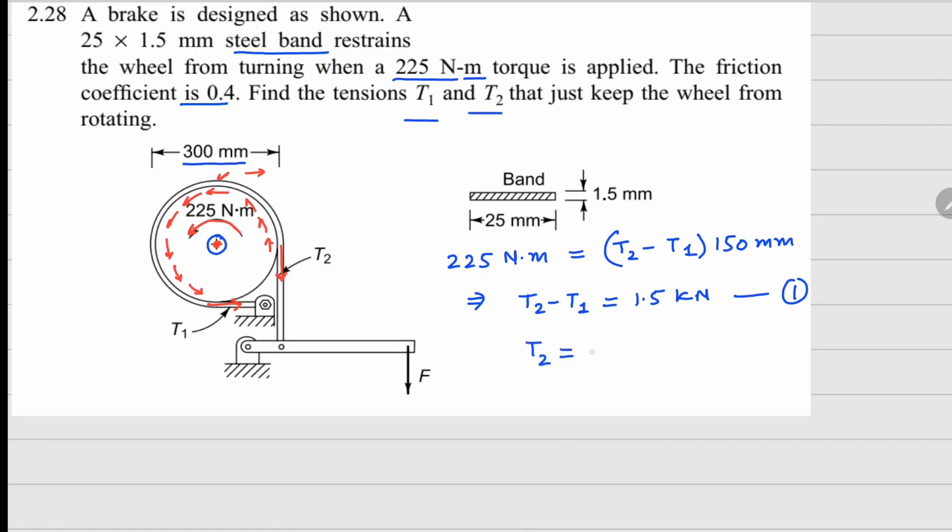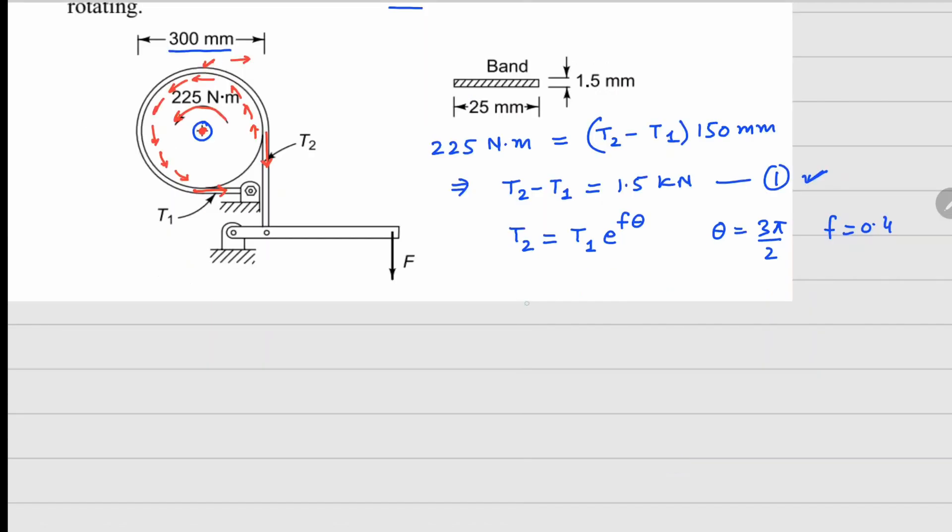Based on this, we can write T2 = T1 × e^(f·θ). The angle θ is 3π/2, and f is 0.4. Substituting these values, we get T2 = T1 × e^(0.6π). This is the second equation.